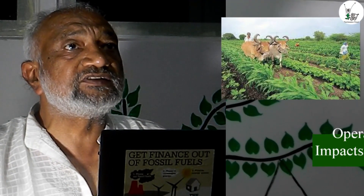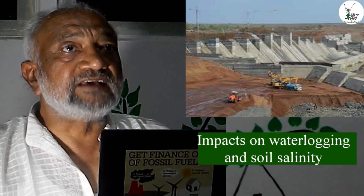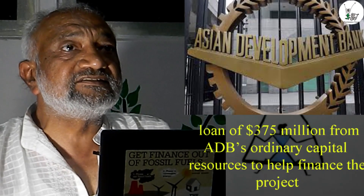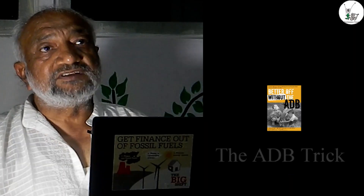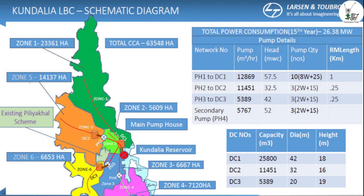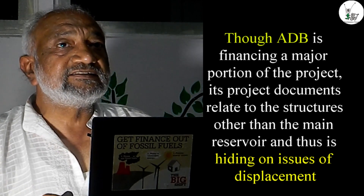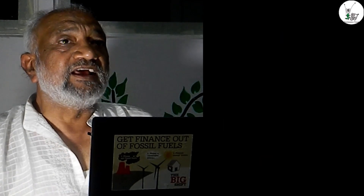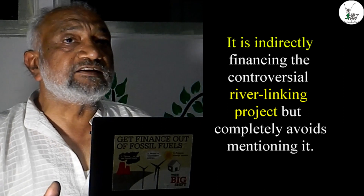The ADB has granted a 26-year term loan of $375 million for this project, while another $160.71 million is what the government of Madhya Pradesh is supposed to bring. The ADB, though it is a major investor, claims that the components it is funding are the canals and other irrigation systems — not the reservoir itself. It is thereby hiding behind that distinction and is not willing to take responsibility for the displacement caused by the project.